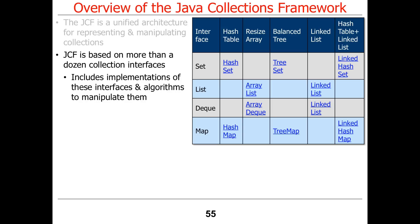Java does have pointers — they're called references. Every time you say new, that's called a reference in Java, but it's a pointer. What Java doesn't have is explicit dynamic memory deallocation. It has memory allocation, obviously, but instead of explicit deallocation, it has garbage collection.